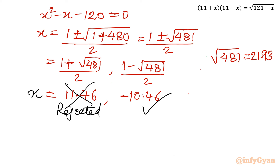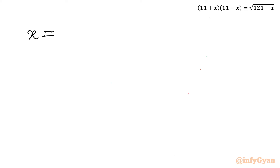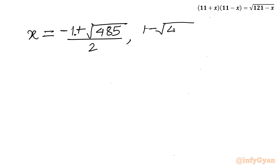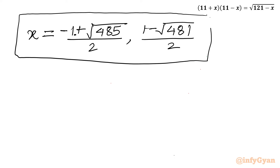So we have two real solutions: x = (−1 + √485) / 2 and x = (1 − √481) / 2. Both solutions are real and can be verified against the original equation, with values lying within the domain (−11, 11). I hope this video was meaningful to you — don't forget to like, share, and subscribe. Bye bye till the next video. Good luck and take care.